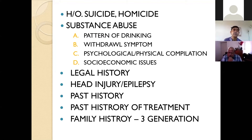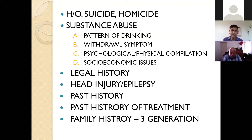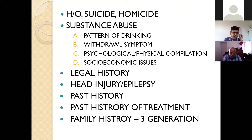Certain things common to every history of present illness: always ask about suicide and homicide — history of present illness is incomplete without these. Also document substance abuse: pattern of drinking, current pattern, binge drinking, withdrawal symptoms, psychological and physical complications, and socio-economic issues. If a legal history is present, be careful — consider malingering as a differential diagnosis.